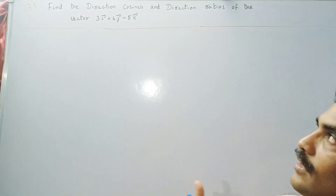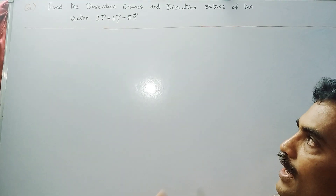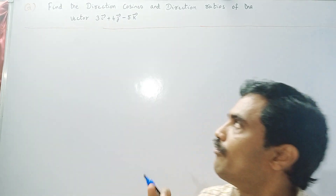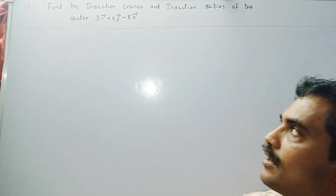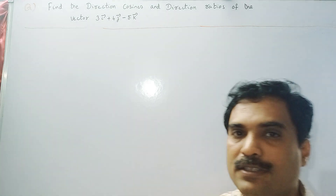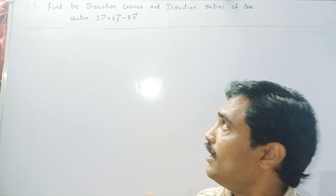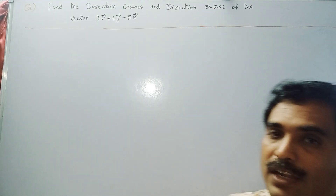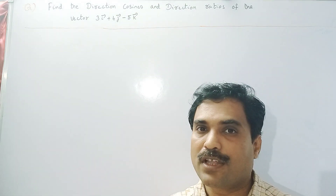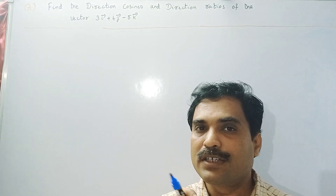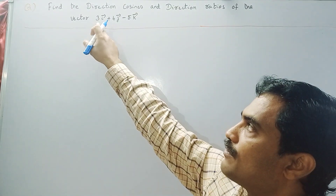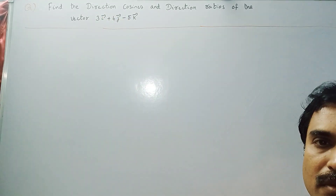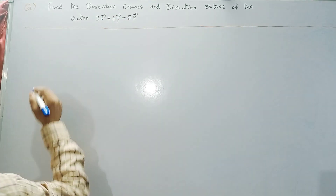Direction cosines means that first you need to find the modulus of the vector. The direction cosines are x by modulus of a bar, y by modulus of a bar, and z by modulus of a bar. Direction ratios are nothing but x, y, z. So here x is 3, y is 4, and z is minus 5.